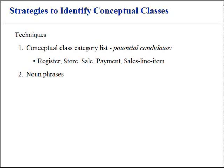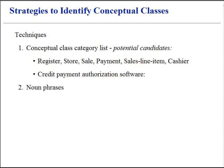Sales Line Item is one of the transaction line items. Cashier and Manager are roles of the system user. Store is a container of other entities in the system. The store stocks the items for sale at the registers; therefore, items for sale become organized as items in the container. Credit Payment Authorization System is an external software system.